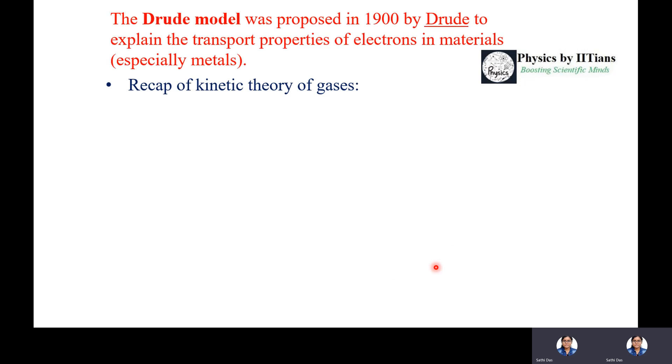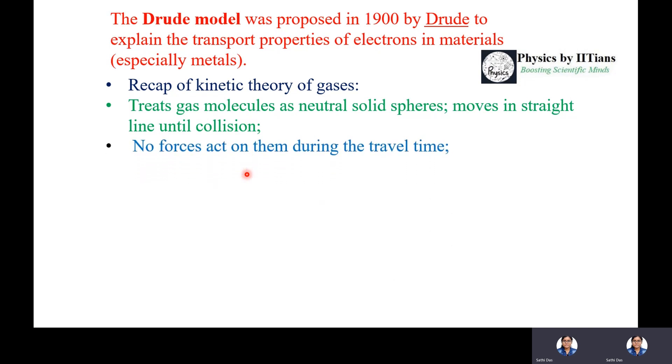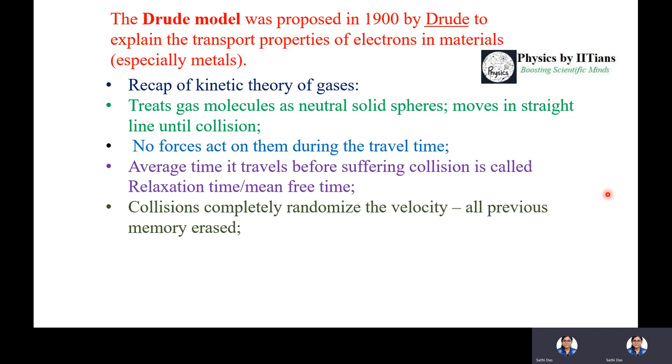What are the basic assumptions of the Drude model? Before understanding this, we need to recap kinetic theory of gases. In kinetic theory, we treat gas molecules as neutral solid spheres that move in straight lines until the next collision. No forces act on them during travel time. The average time it travels before suffering a collision is called relaxation time or mean free time. These collisions completely randomize the velocity, erasing all previous memory of the gas molecules.